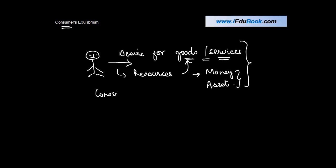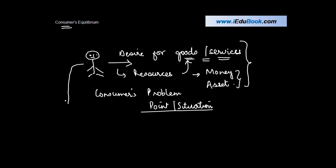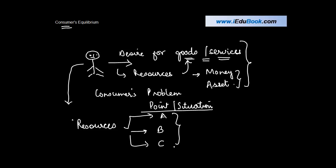This is basically known as the consumer's problem or dilemma. The consumer's equilibrium is the point or situation in which a consumer is able to make an optimal allocation of resources — allocating to good A, good B, good C at different prices — in such a manner that the allocation is best optimized.